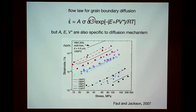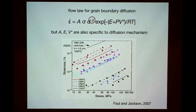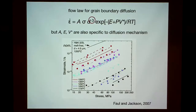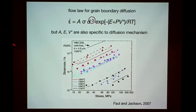We can't do strain rates as we have in the Earth — of order 10⁻¹², 10⁻¹³, 10⁻¹⁴ — that's one of the biggest extrapolations we have to make with these flow laws. There's really nothing we can do about that. This is where having some physical mechanism behind the equations is important, so that we think we can make the extrapolation. The other big extrapolation is in grain size.